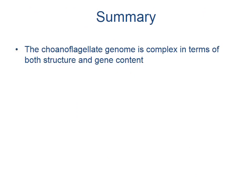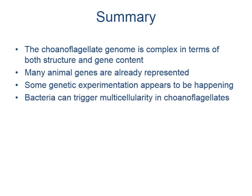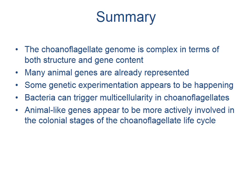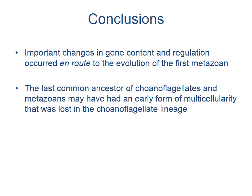To summarize: the choanoflagellate genome is complex in both structure and gene content. Many animal genes are already represented in the choanoflagellate genome, and genetic experimentation appears to be happening on the lineage leading to animals. Bacteria can trigger multicellularity in choanoflagellates, and animal-like genes appear more actively involved in colonial stages. Important changes in gene content and regulation occurred en route to the evolution of the first metazoan, and the last common ancestor of choanoflagellates and metazoans may have had an early form of multicellularity.